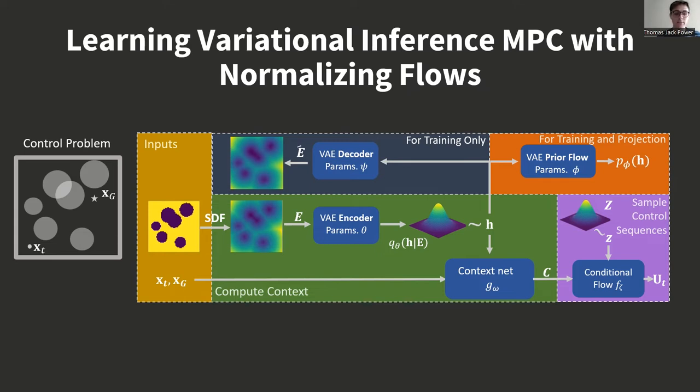Our total objective is the expected cost of the control sequences, the negative entropy of the sampling distribution, and the VAE loss.